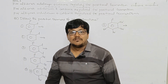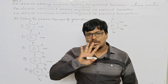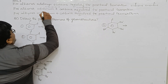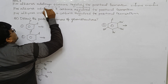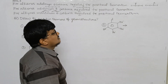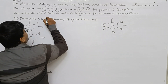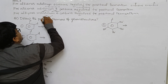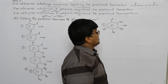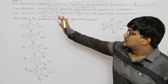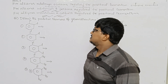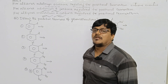So for alkanes (all kinds), minimum 6 carbons are required to exhibit positional isomers. For alkenes (all kinds), minimum 4 carbons are required. For alkynes (all kinds), minimum 4 carbons are also required to exhibit positional isomers.